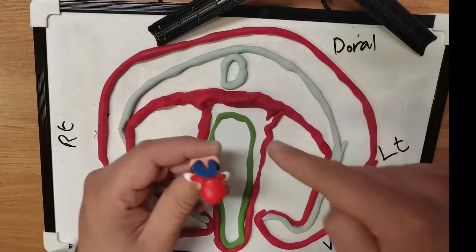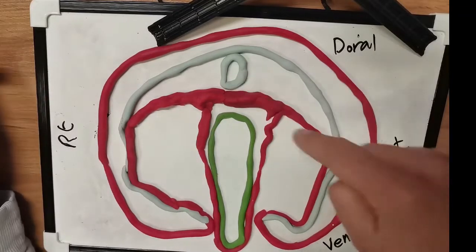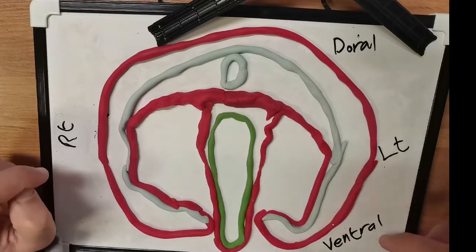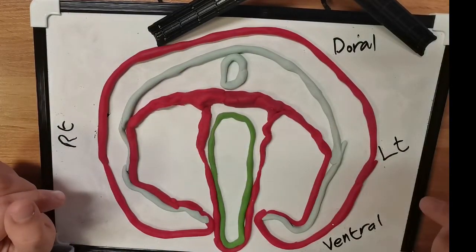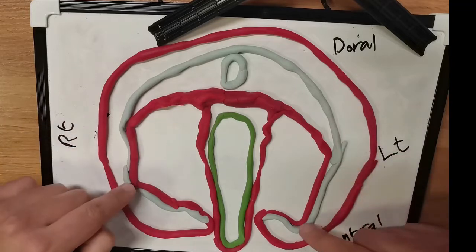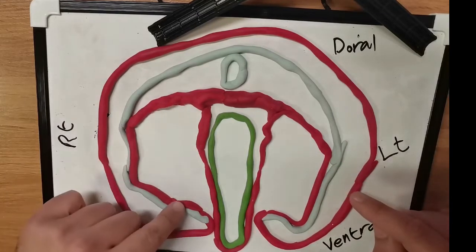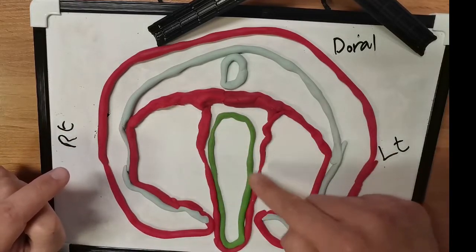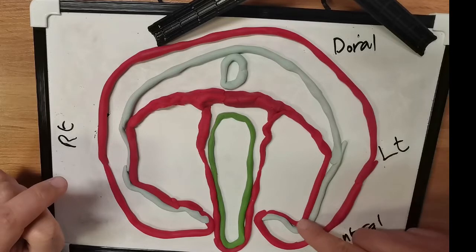Right and left, dorsal and ventral. This is our endoderm and yolk sac, surrounded by the visceral layer of mesoderm. Here is our ectoderm, which is lined with the parietal layer of mesoderm. So the endoderm is surrounded by the visceral mesoderm, and the ectoderm is lined with the parietal mesoderm.